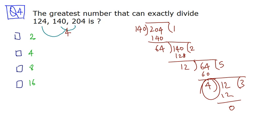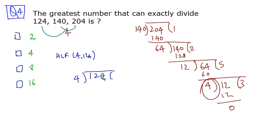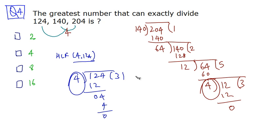Now we calculate the HCF of 4 and 124. Dividing 124 by 4 — it is exactly divisible: 4 times 31 is 124, remainder 0. So the HCF is 4. We first found the HCF of the first two numbers as 4, then found the HCF of 124 and 4, which is again 4. So the correct option is option B.